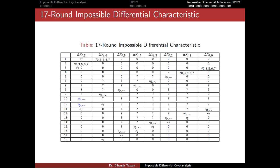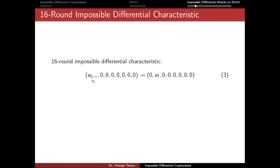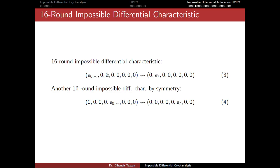Instead of specifying all eight bits explicitly, we only specify the first bit — difference one — and leave the remaining bits as question marks. Since the cipher has some kind of symmetry, if this is an impossible differential for 16 rounds, it means this input difference never goes to this output difference after 16 rounds of encryption. It also means that shifting by four more to the right holds the same property due to the cipher's symmetry.